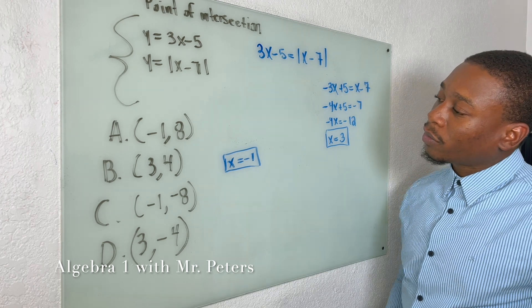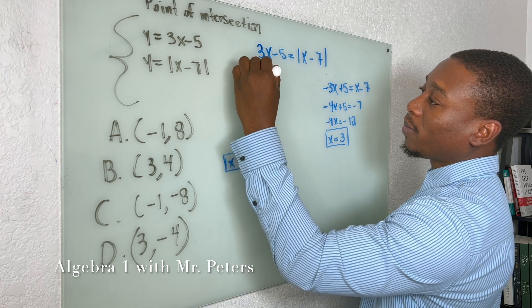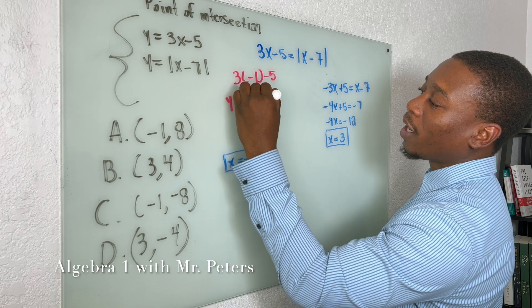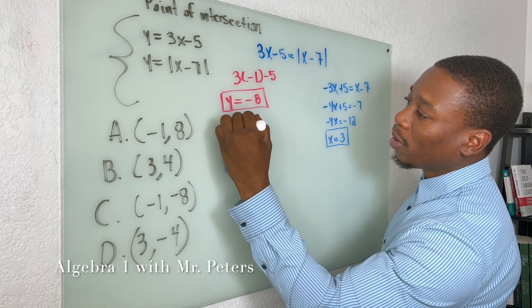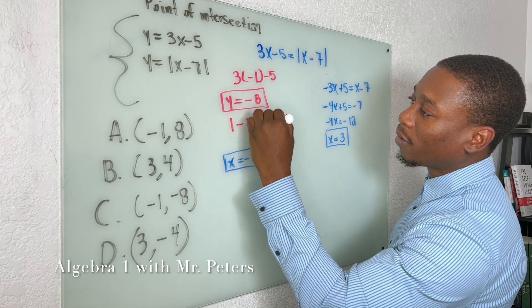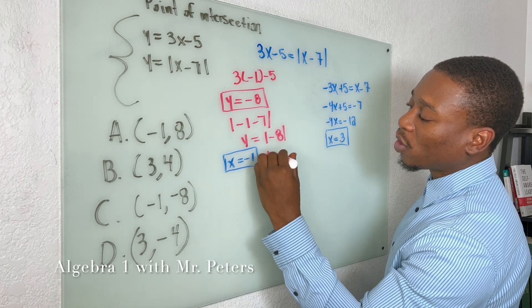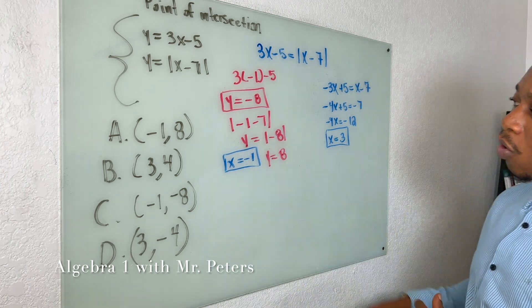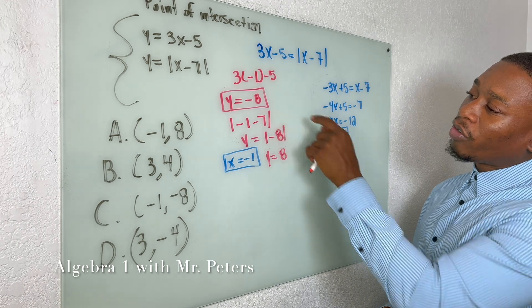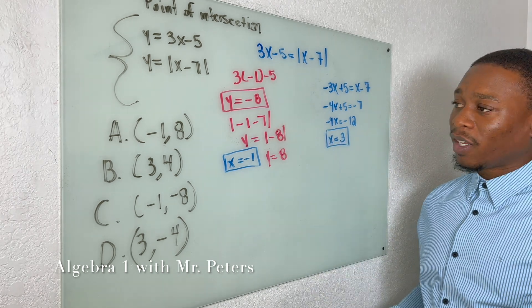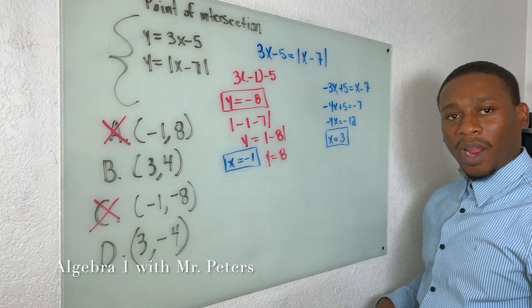And then the same thing here: -4x + 5 = -7. We'll have -4x = -12, x = positive 3. So now I have two answers right? We have the x, but we don't have the y. So now we're going to plug this back in and see which one of these is going to solve both of the equations. Let's do x = -1. So we have 3 times -1 minus 5, we're going to get y = -8. In the second one, we have the absolute value of -1 - 7. So y = absolute value of -8, which is positive 8. So off rip, I could tell that something's not right with this answer because one equation gives me positive 8, another equation gives me negative 8.